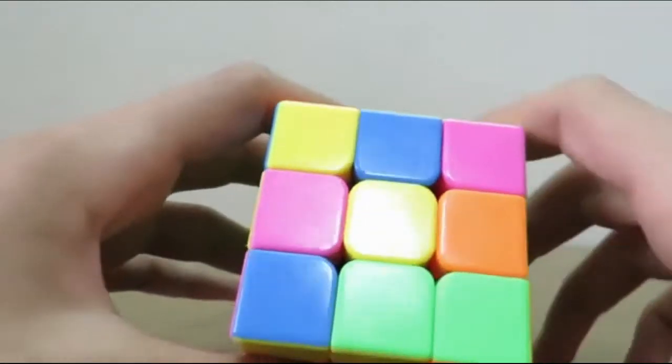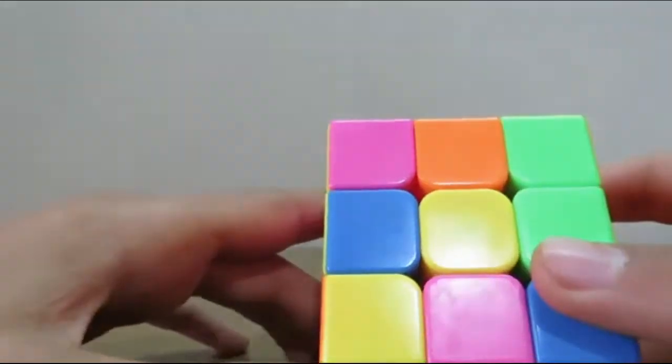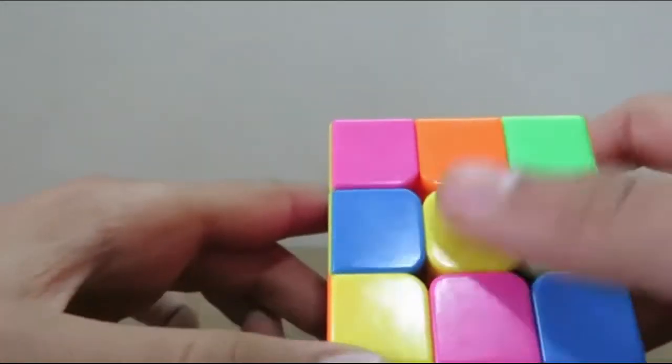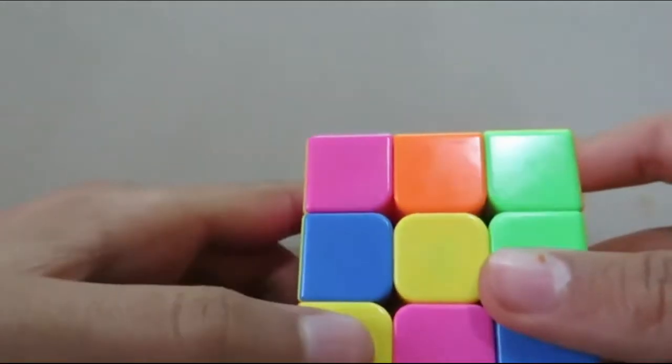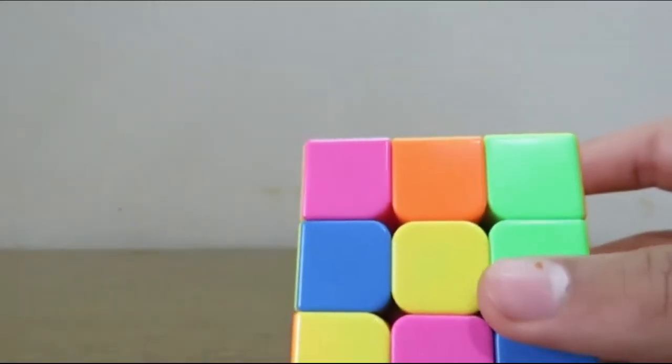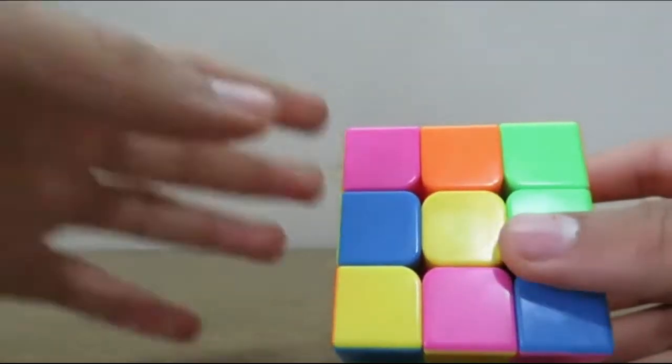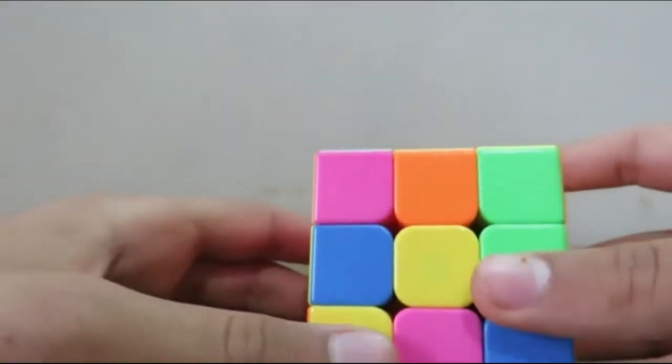These are some situations you could end up with after finishing the previous stage. Look at your Rubik's Cube—it doesn't matter where the edges are, they even could be solved, but we need to look at our edges only. Look only at these pieces; these corners don't matter.